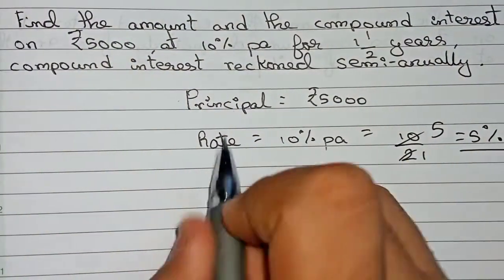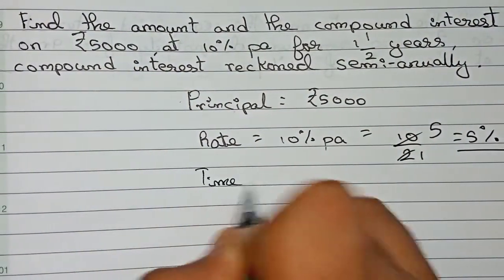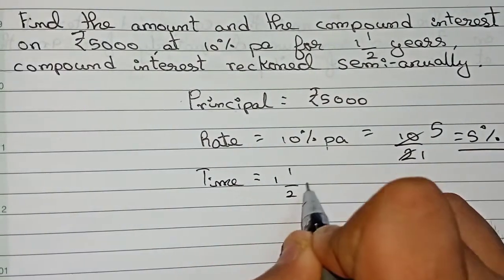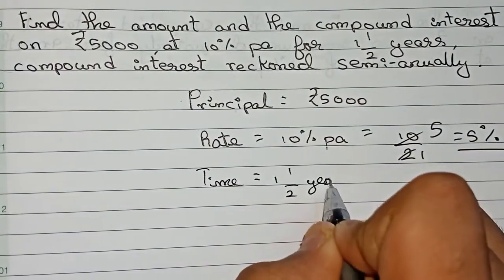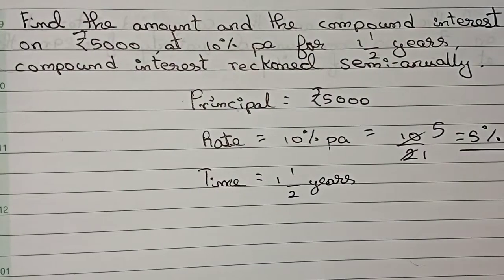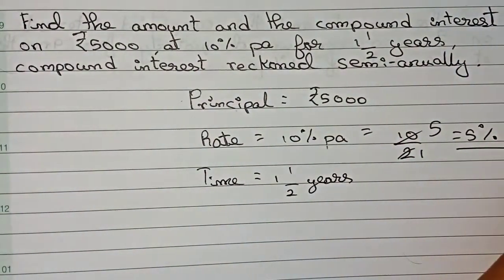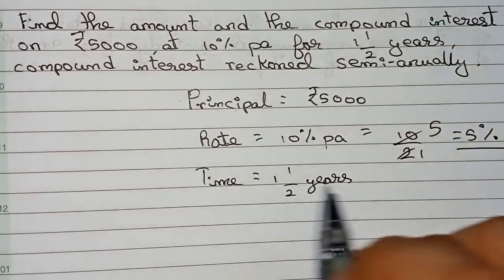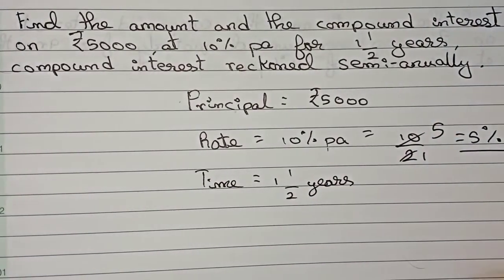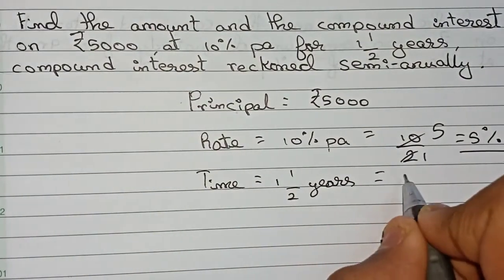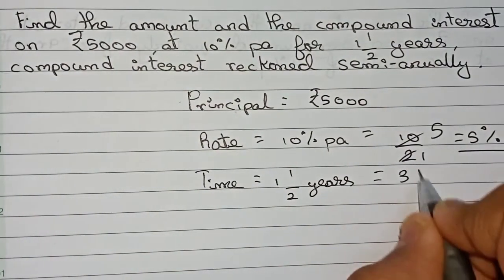The time is one and a half years, which is one year and six months. We convert this into half-year periods: one year contains two half-years, plus one more, giving a total of three half-years. So n equals three.